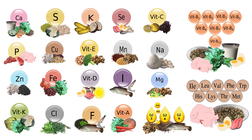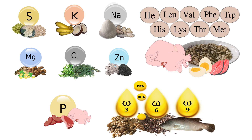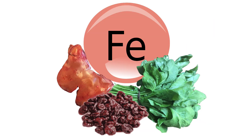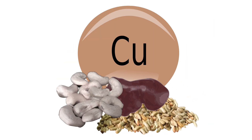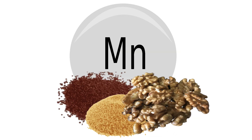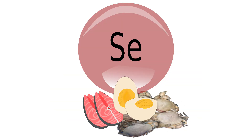Essential nutrients are divided into two types: type 1 nutrients, or functional nutrients, and type 2 nutrients, or growth nutrients. Iron, calcium, iodine, copper, manganese, fluorine, and selenium are type 1 nutrients.